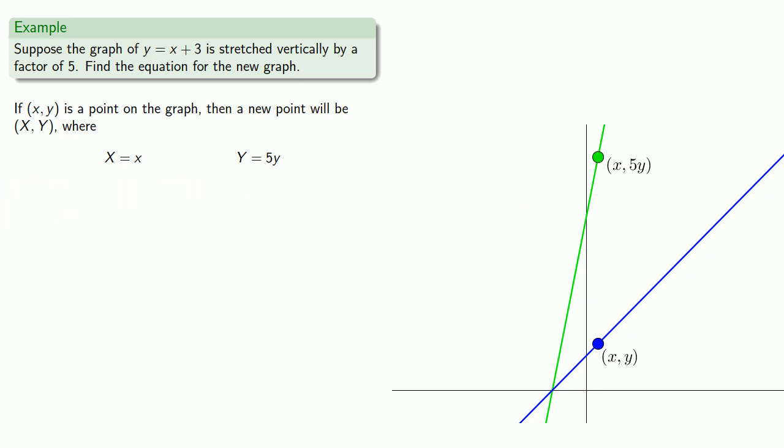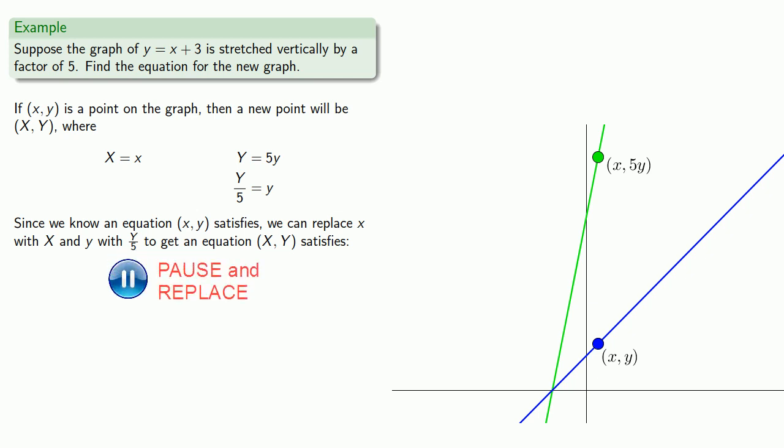Solving for our original variables, since we know an equation lowercase x and y satisfies, we can replace lowercase x with capital X and lowercase y with capital Y/5 to get an equation that X, Y satisfies. Once again, capital X and Y are just coordinates, so we can write them as lowercase x and y to get our equation.